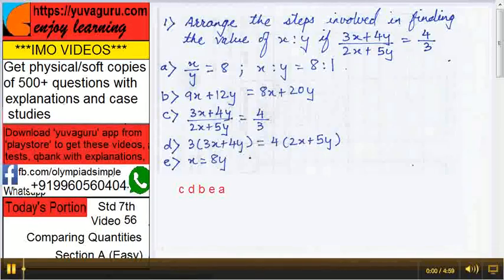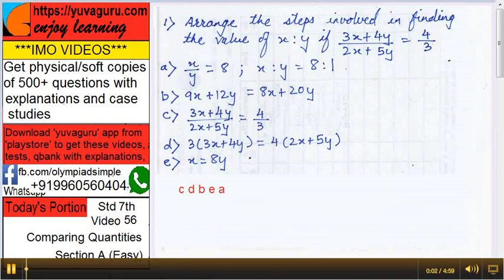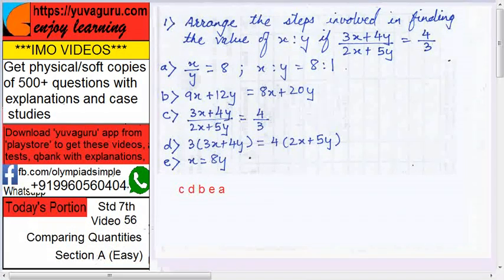Hi friends, welcome to IMO videos, standard seventh, video number 56, comparing quantities section A easy. Let's start. Arrange the steps involved in finding the value of x upon y if 3x plus y upon 2x plus 5y equals to 4 upon 3.